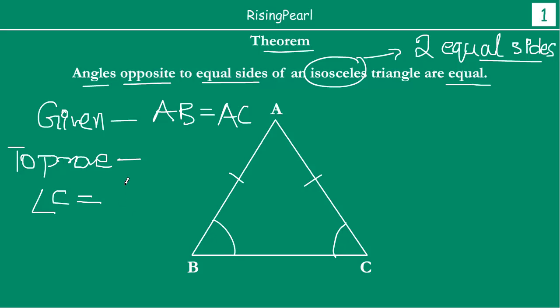We have to prove that if AB equals AC in an isosceles triangle, then angle B equals angle C, or angle C equals angle B. This is what we have to prove.